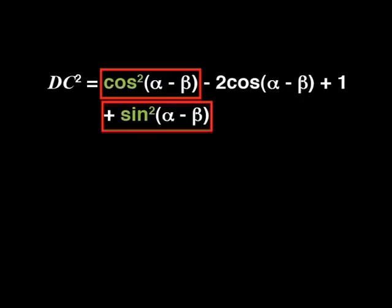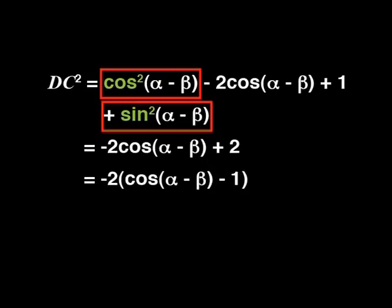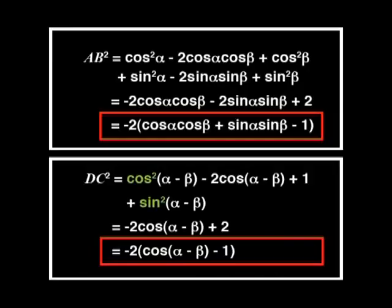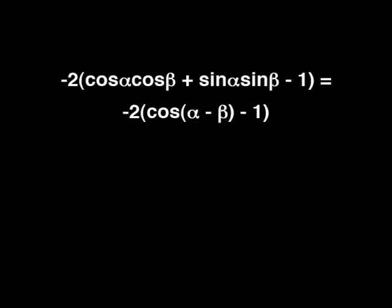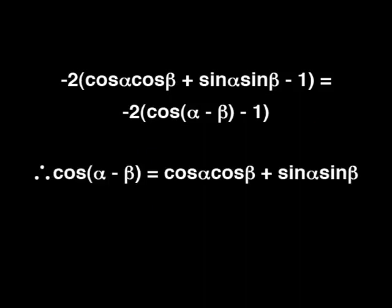In the expression for DC squared, there's another one in disguise: cosine squared(alpha minus beta) plus sin squared(alpha minus beta). So the DC squared expression also simplifies with a common factor of minus 2. These two expressions are equal to each other. We can divide both sides by minus 2 and then add 1 to both sides, and we get that compound angle identity. We call this a compound angle formula because alpha minus beta is a compound angle.